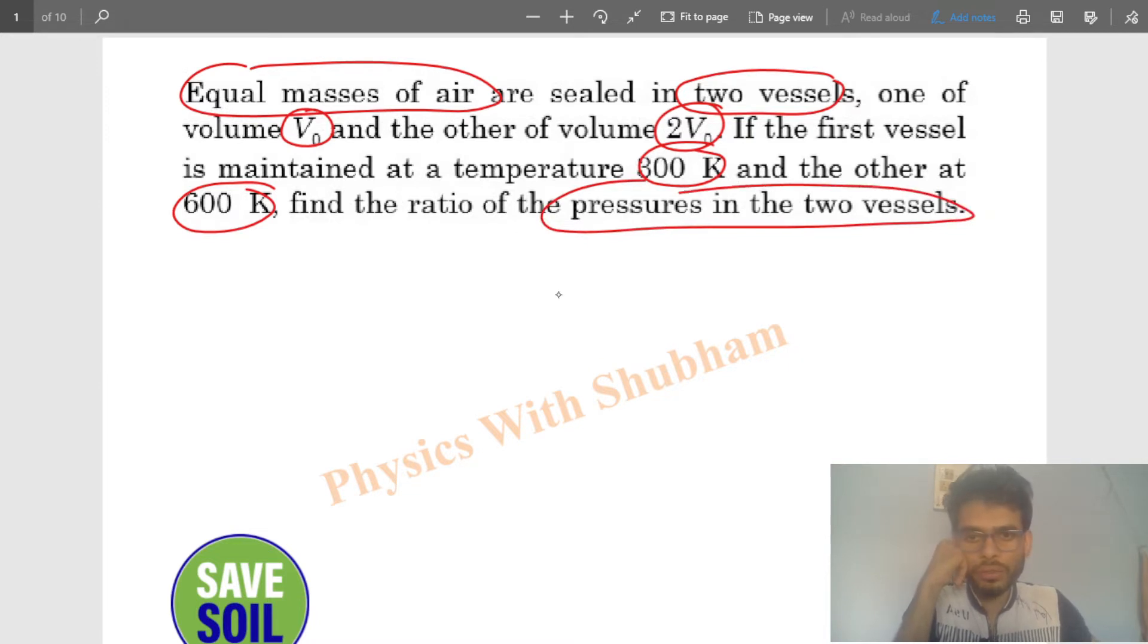So we have two vessels, something like this. This one has volume V0 and this one has volume 2V0. Now we put equal mass of air in both. Let's say we put m grams (small m) of air in both vessels, and the air has a molar mass, capital M.